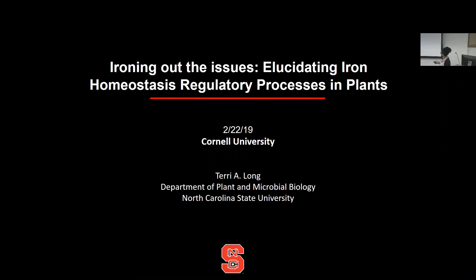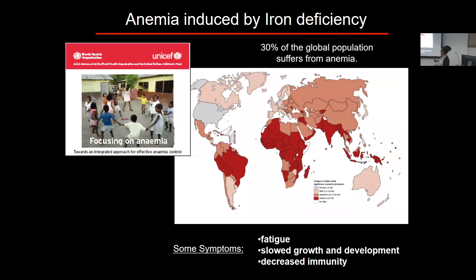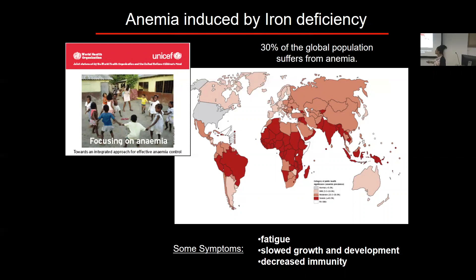I study iron homeostasis in plants, and the reason why I study it is because iron deficiency-induced anemia is the most prevalent nutritional disorder in the world. Possibly 30% of the global population suffers from anemia due to iron deficiency, and most people obtain their iron from plants due to socioeconomic and religious reasons.